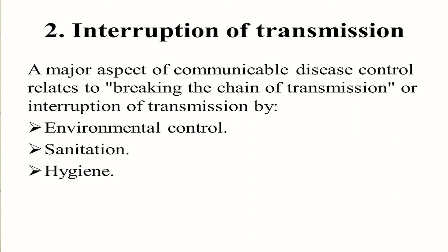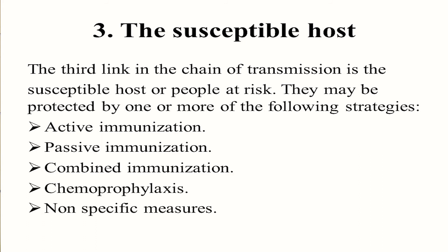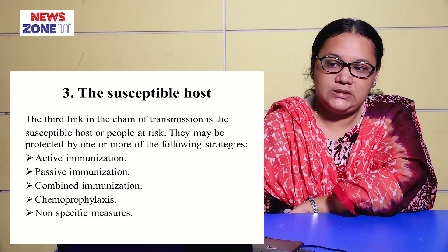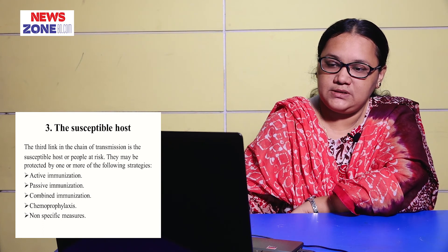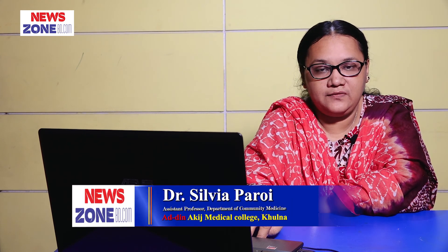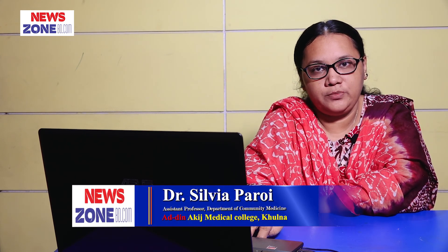Interruption of transmission is achieved by environmental control, sanitation, or personal hygiene maintenance. The third link in the chain of transmission is the susceptible host or people at risk. They may be protected by active immunization, passive immunization, or combined immunization. Chemoprophylaxis and non-specific measures, and health education are the most important measures to control the susceptible host and advise them about communicable disease transmission.